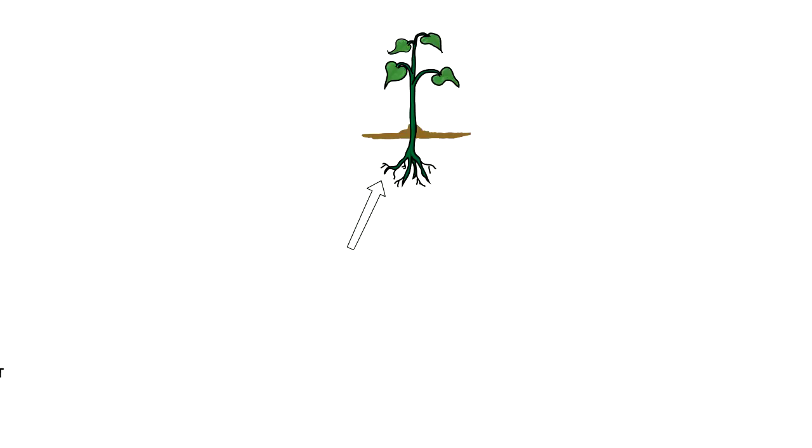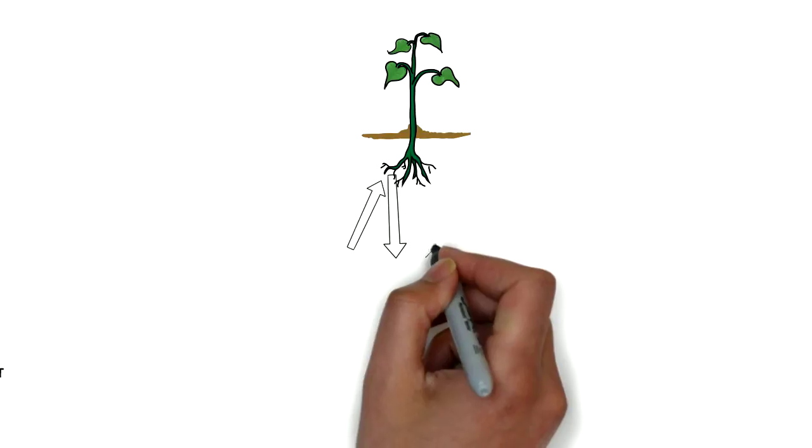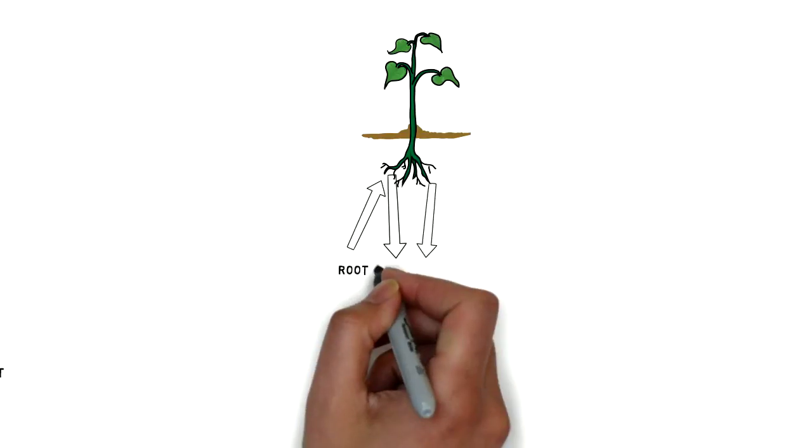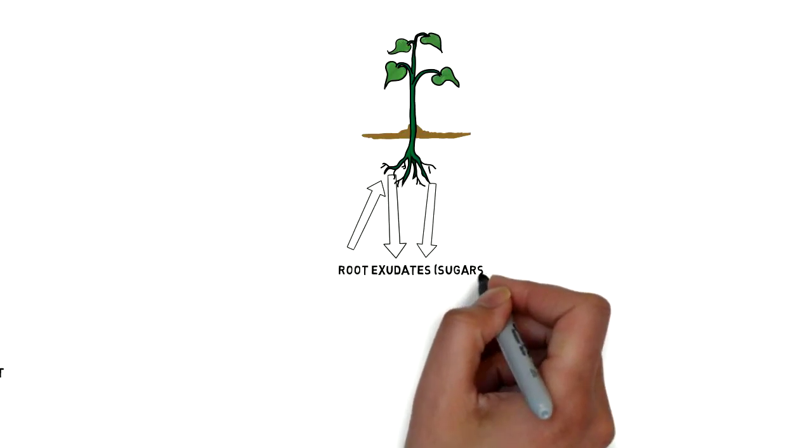The plants take up the water and the nutrients in the roots, but they're also sending sugars, called the root exudates, down into the soil to feed the bacteria and the fungus. Here's the magic behind it.